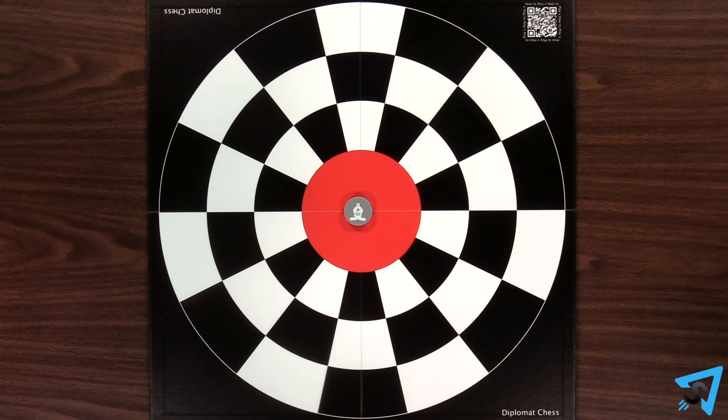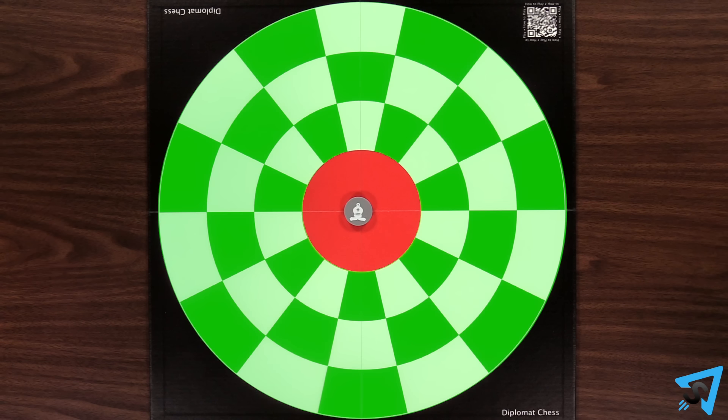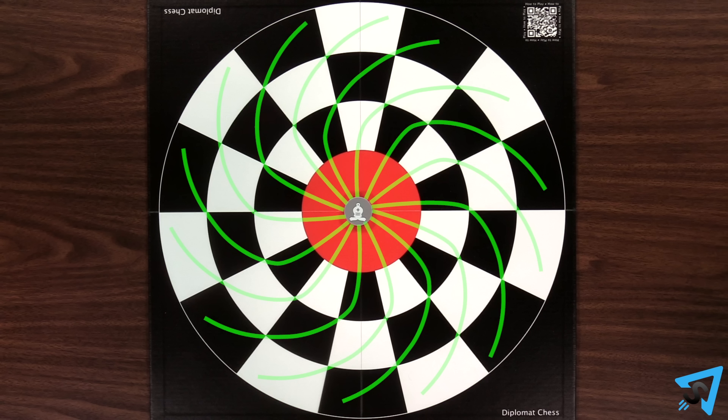A bishop in the center space can reach any space on the board in a diagonal outward line unless its path is obstructed by another piece.